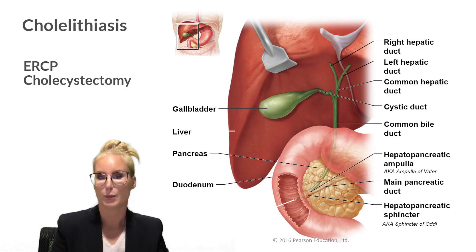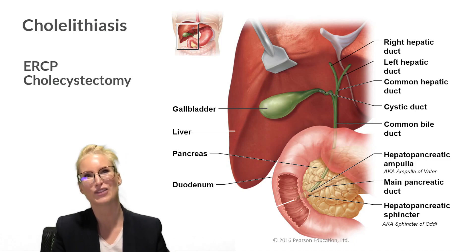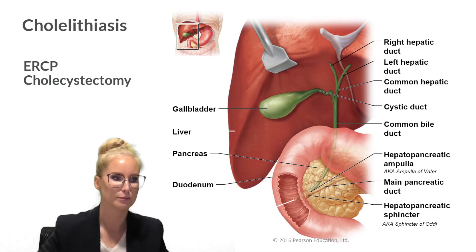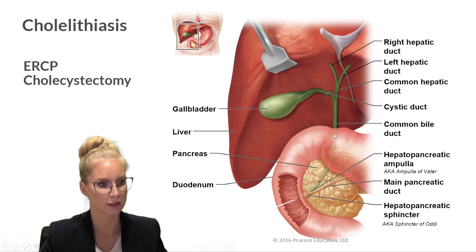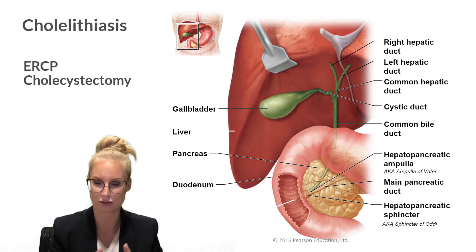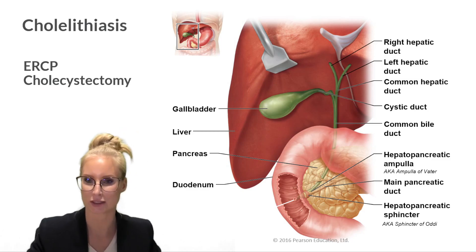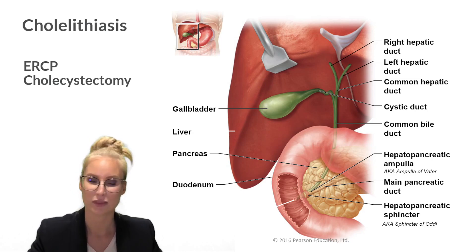Management may include ERCP — endoscopic retrograde cholangiopancreatography — which involves passing an endoscope through the duodenum to remove the stone. For example, a balloon can be inflated past the stone to push it out, or brittle stones can be snared and crushed into small pieces to pass naturally. If the pain is constant, severely affecting quality of life, or keeps recurring, a cholecystectomy — surgical removal of the gallbladder — might be considered.